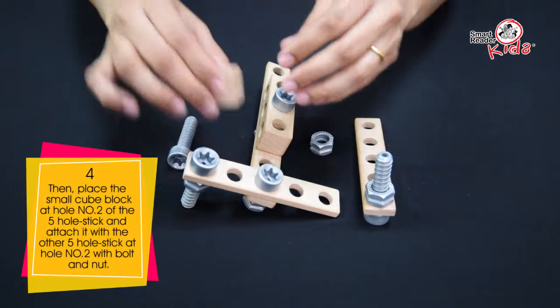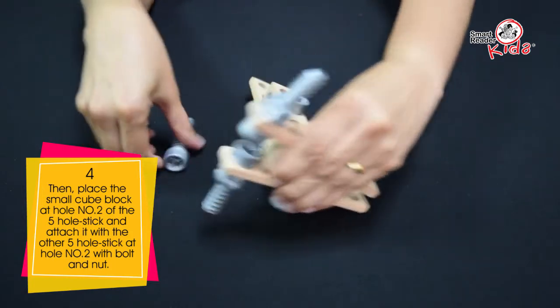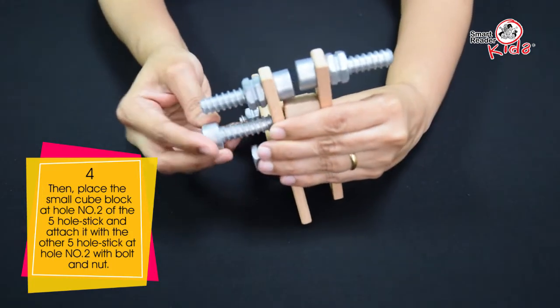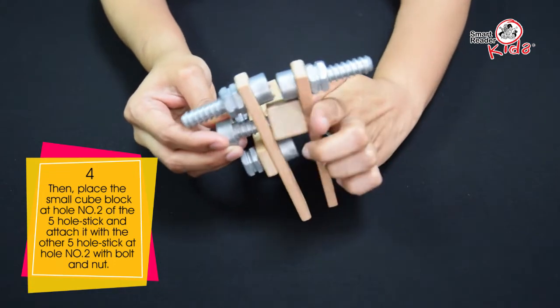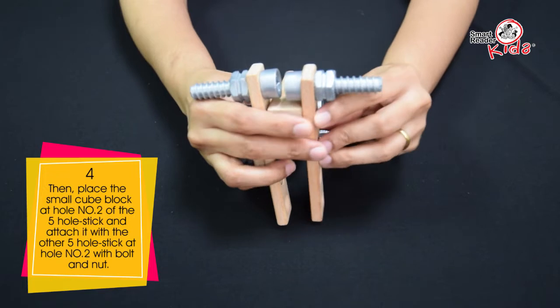Then, place the small cube block at hole number 2 of the 5-hole stick and attach it with the other 5-hole stick at hole number 2 with bolt and nut.